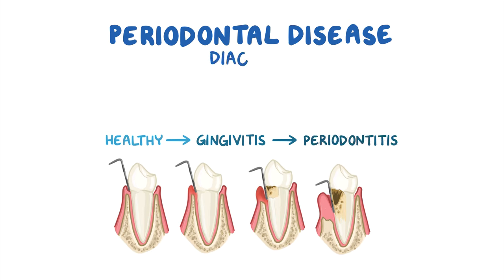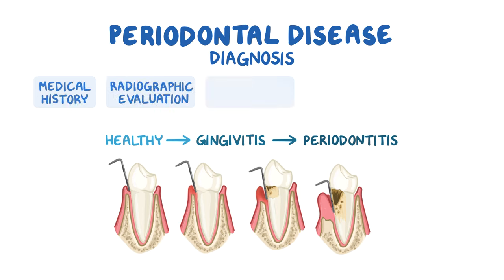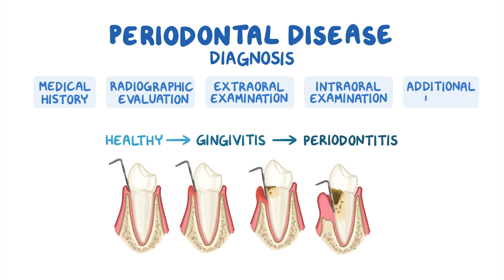The goal of diagnosis is to detect early signs of periodontal disease, treat the condition, and prevent further complications. The diagnosis of periodontitis is a systematic process subdivided into several parts, including the patient's medical and dental history, radiographic evaluation, extraoral examination, intraoral examination, and additional diagnostic tests and procedures.